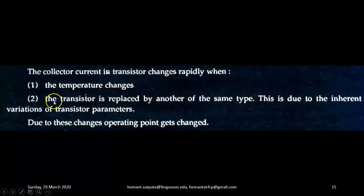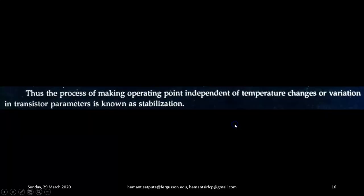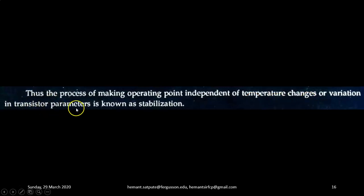Due to these changes, the operating point gets changed. Thus, the process of making the operating point independent of temperature changes or variation in transistor parameters is known as stabilization.